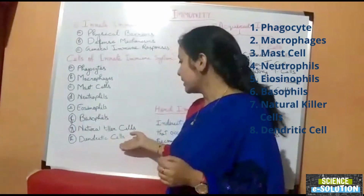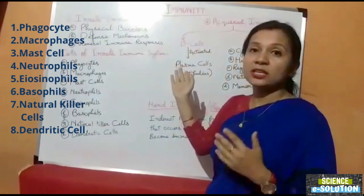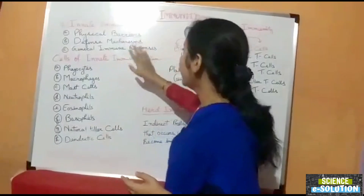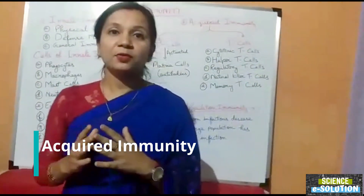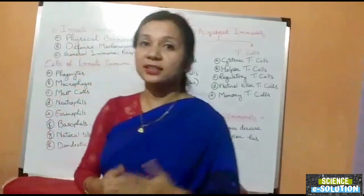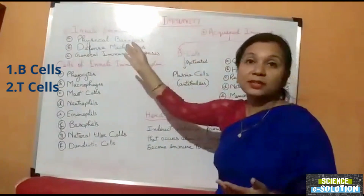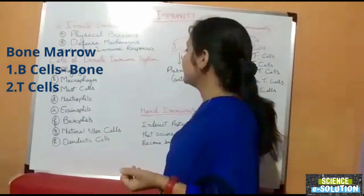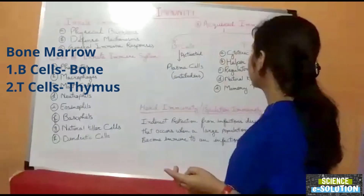The last innate immunity cells are dendritic cells, which can sense threats to the immune system and send messages to the broader immune system to activate further immune cells. They act as a bridge between innate immunity and acquired immunity. The second type of immunity is acquired immunity, gained through previous encounters with antigens. It has two types of components: B cells and T cells. B cells are formed and mature in the bone marrow, whereas T cells are formed in the bone marrow but mature in the thymus.